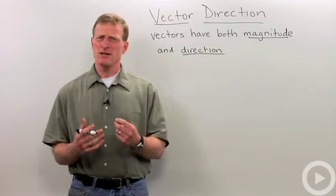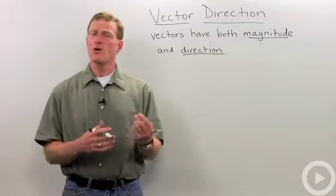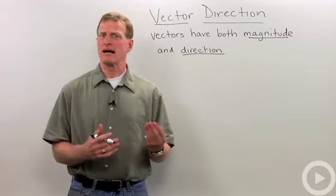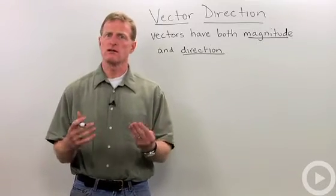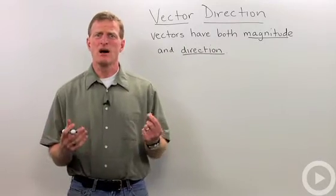But direction is pretty specific, right? You've got to be going east or north or west, or sometimes we talk about angles: 90 degrees, 0 degrees, 270 degrees. So let's look at some examples of vectors.